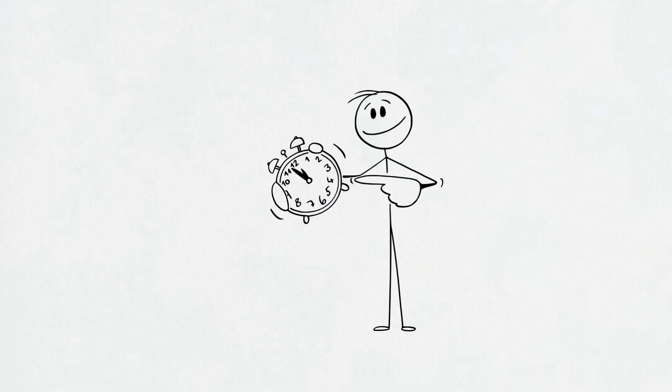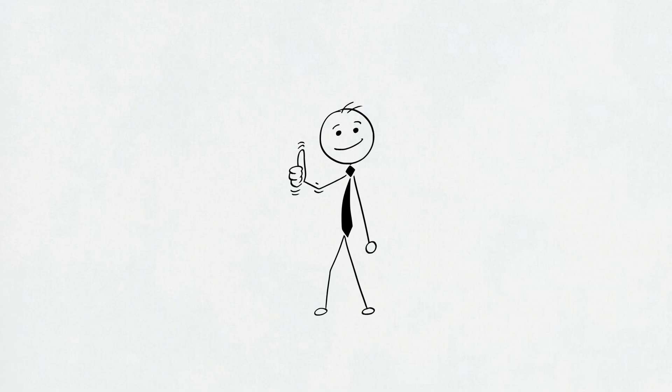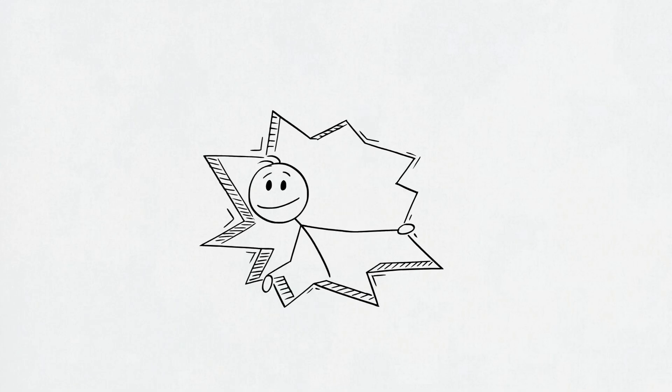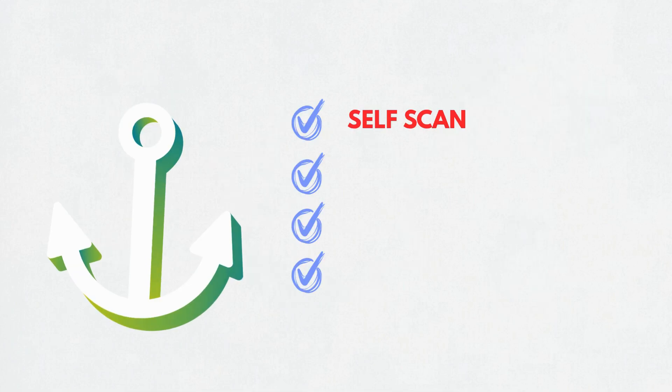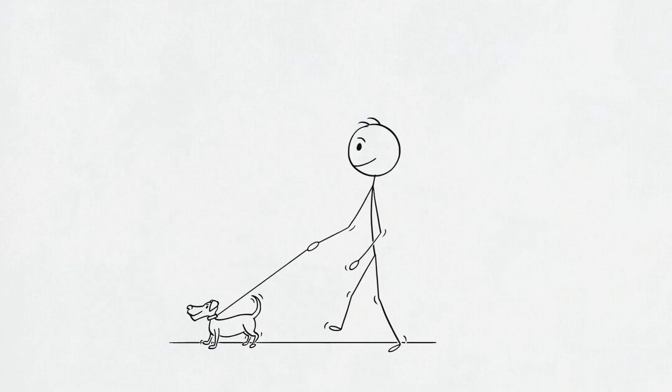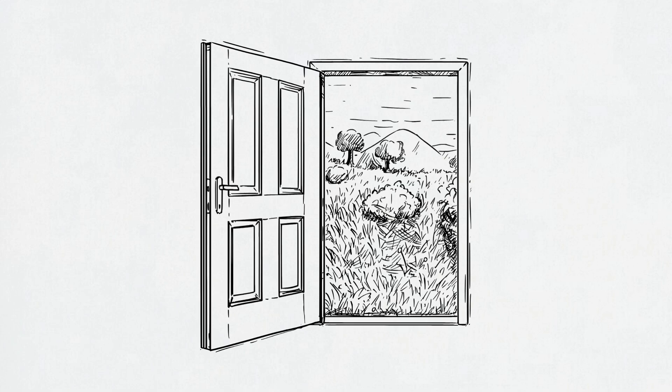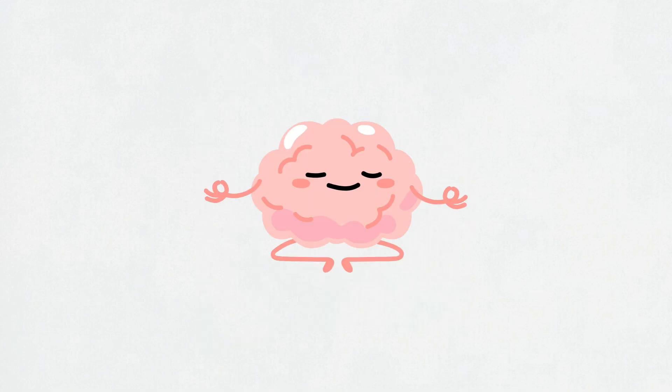Here are the four final steps to put your focus toolkit into action. First, self-scan. Figure out when your brain actually works best. Morning, late night, right after a walk. Great. Use it. Also note what completely wrecks your attention. Phones, noise, clutter, your own thoughts so you know what to avoid or control. Second, anchor your day. Start with three non-negotiables. Sunlight, movement, and water. Get outside. Stretch something. Hydrate. These aren't hacks. They're basics that keep your brain from crashing.